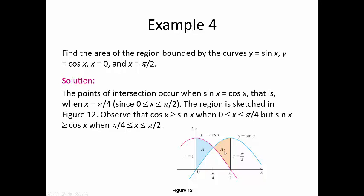Once you find the two areas, you add them together. So the first area integrates from 0 to pi over 4 with cosine on top and sine on bottom. The second area integrates from pi over 4 to pi over 2 with sine on top and cosine on bottom. The first area of integration goes from 0 to pi over 4, and the second area goes from pi over 4 to pi over 2.